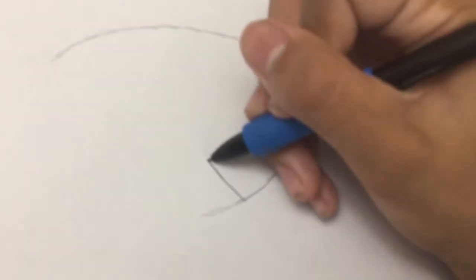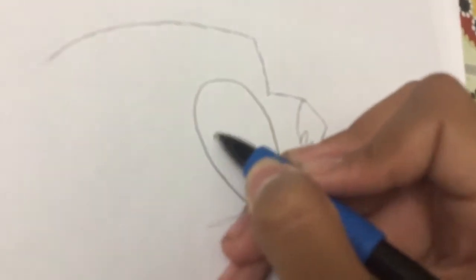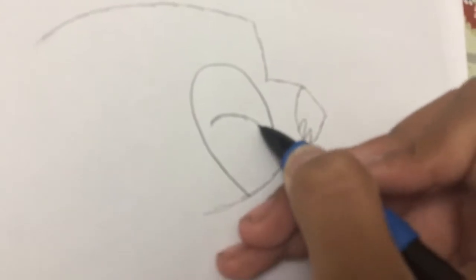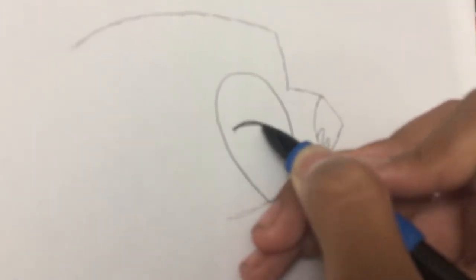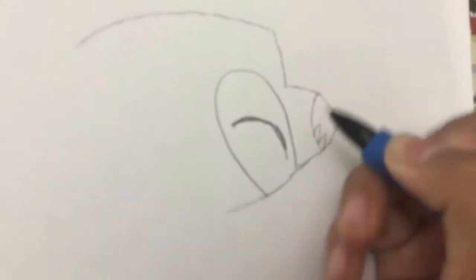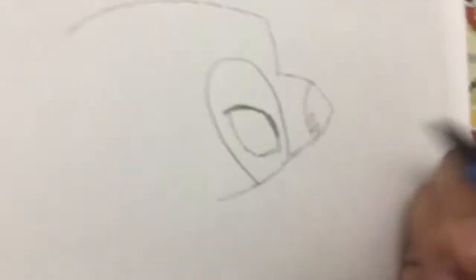Then the eyes. Draw a circle or an oval. And then you draw the eye part, like the upper eye part, and then the lower eye part, like this.